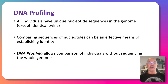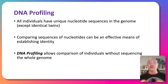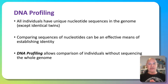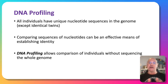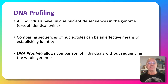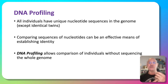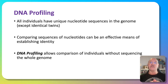Starting with DNA profiling: all individuals have unique nucleotide sequences in their genome, except for identical twins who have an identical genome. We often call this the genetic fingerprint because everybody is individual. We can compare the sequences of nucleotides as an effective way of establishing identity. DNA profiling is a technique used to compare individuals' DNA sequences without having to use the whole genome.